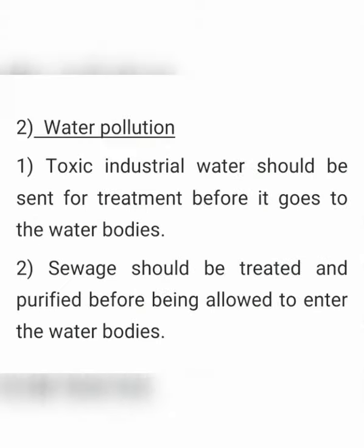Measures to control water pollution: Point number 1 — toxic industrial water should be sent for treatment before it goes to the water bodies. Point number 2 — sewage should be treated and purified before being allowed to enter the water bodies.